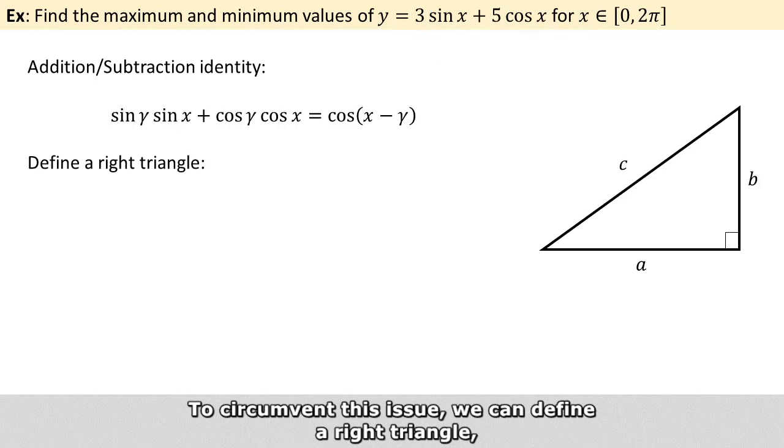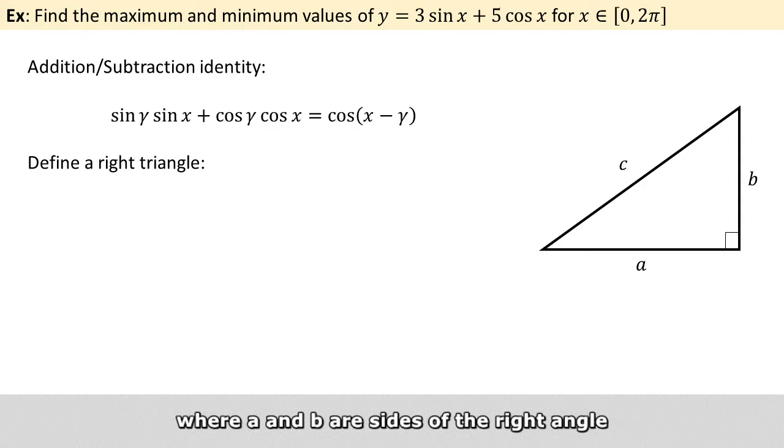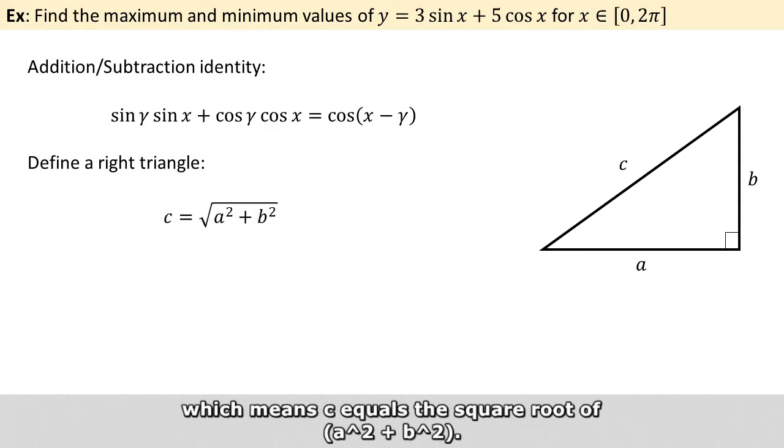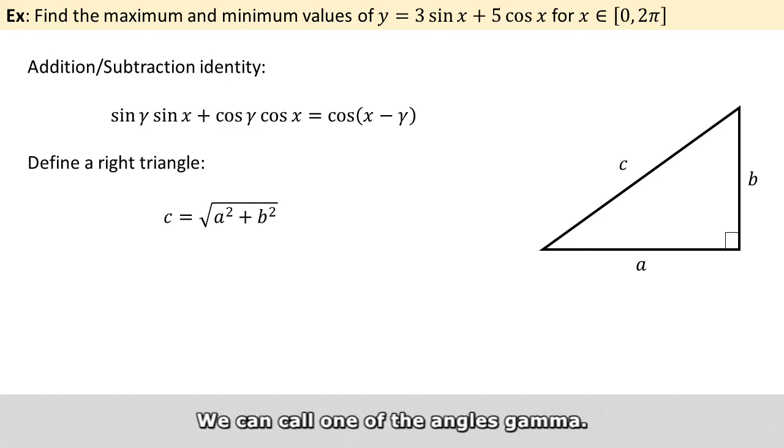we can define a right triangle where a and b are the size of the right angle, which means c equals the square root of a squared plus b squared. We can then call one of the angles gamma.